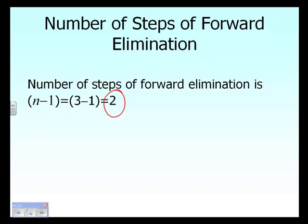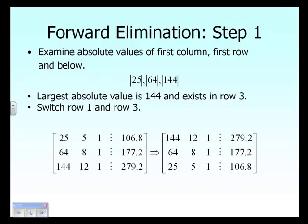We will have two steps of forward elimination because we have n minus one steps, where n is the number of equations. We have three equations, so three minus one is two steps. The key difference between Gauss elimination with partial pivoting and Naive Gauss elimination is that you don't straight away start doing the elimination.